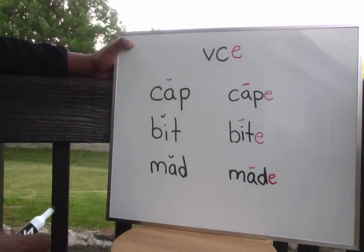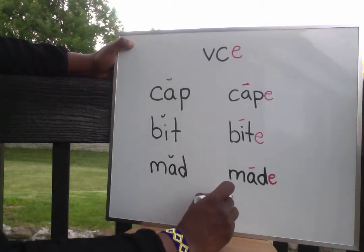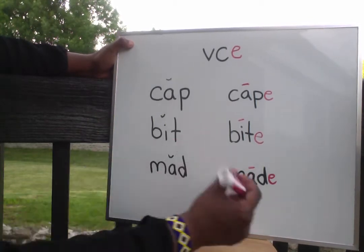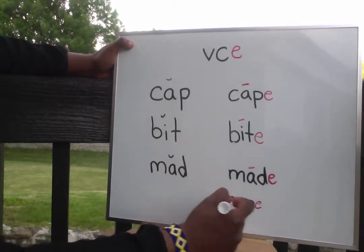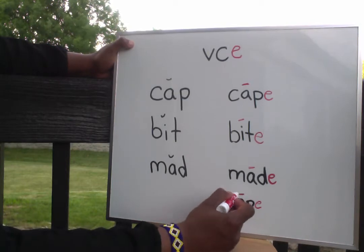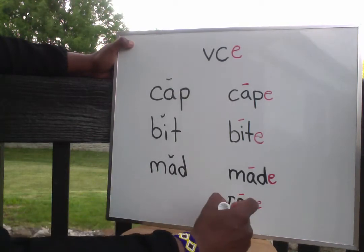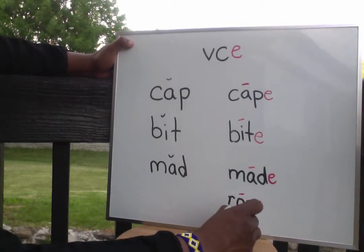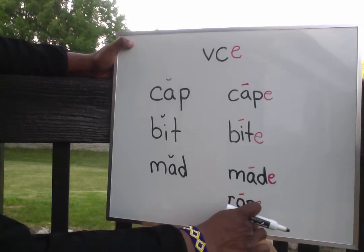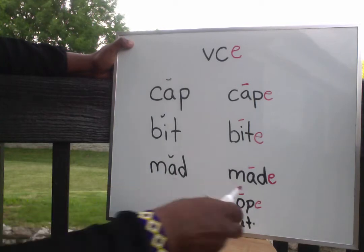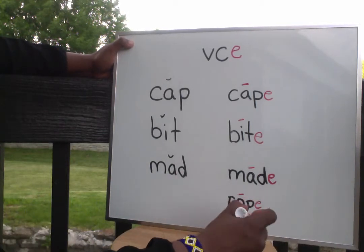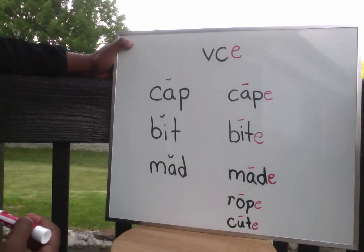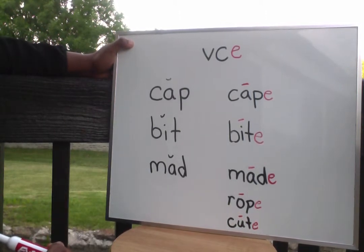You can have a word with O — rope — making that long O. Or a U — that E is making that U a long vowel sound, and then you're saying you. Cute.